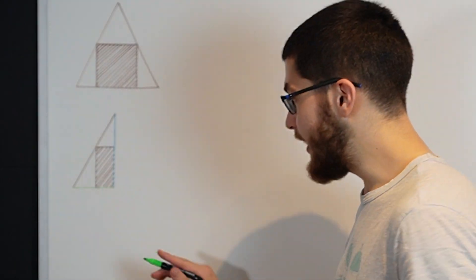So the first step is to split this triangle into two right-angled triangles. Next, I'm gonna label the sides of the right-angled triangle.